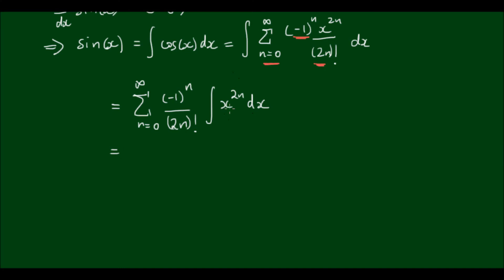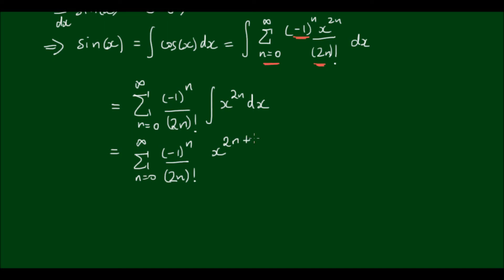And now this is a very simple integral to perform. x to the 2n integrates to x to the 2n plus 1 — this is a power integral — divided by the new power, which is 2n plus 1.